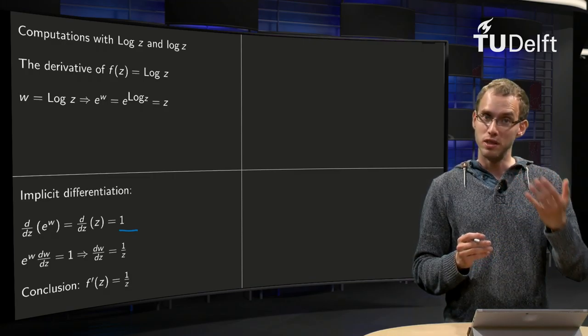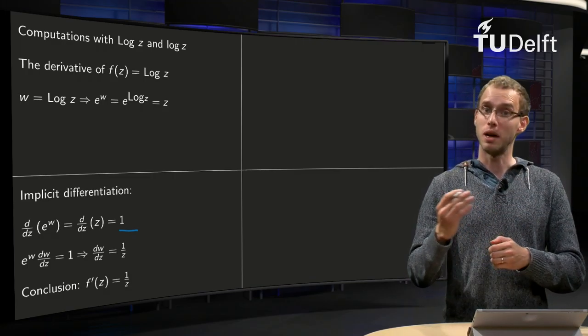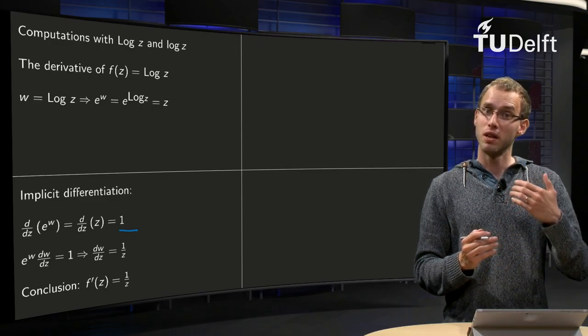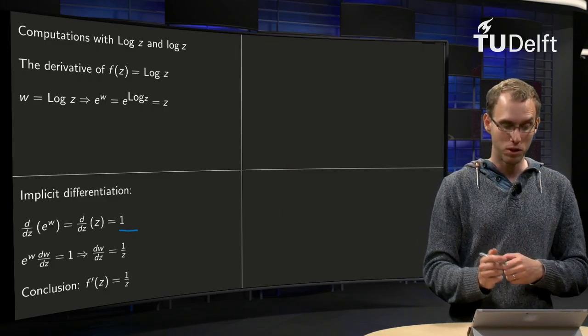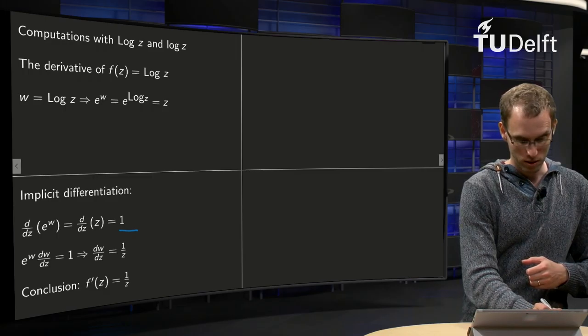Use the chain rule: that is ddw of e to the power w times dw dz, so it yields e to the power w times dw dz.